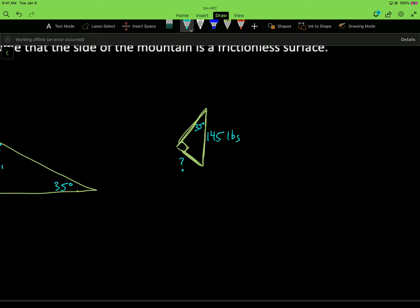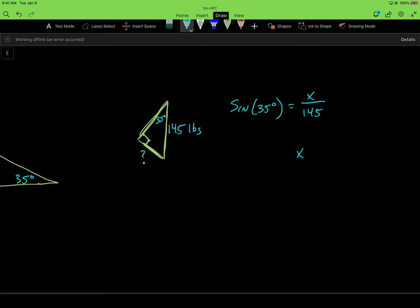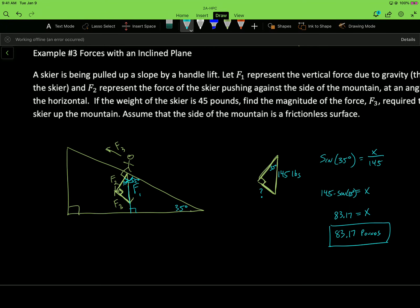So now I do some trigonometry. I have opposite and hypotenuse. So I say sine of 35 degrees is equal to the opposite, the unknown. So I'll just call that x over 145. So solving for x, I get 145 times sine of 35 degrees. And this would be the force required to pull the skier up the hill. So 145 times sine of 35, I get 83.17 pounds of force. That's going to be required to pull them up the hill. We'll see some more of these incline problems.